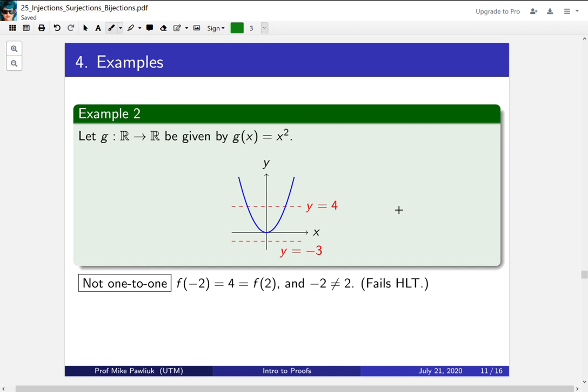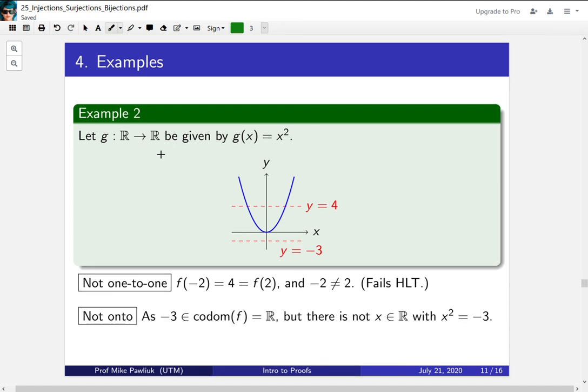Now is it onto? Does this function hit every value in the codomain? No, it misses negative numbers. So -3 is in the codomain of this function, but there's no x that produces it. You can see on the diagram that when we draw the line y = -3, the function doesn't intersect it at all. So this tells us there's no x that outputs it.